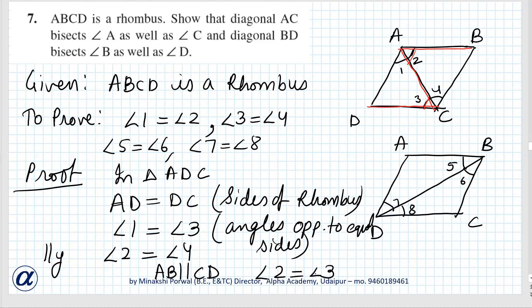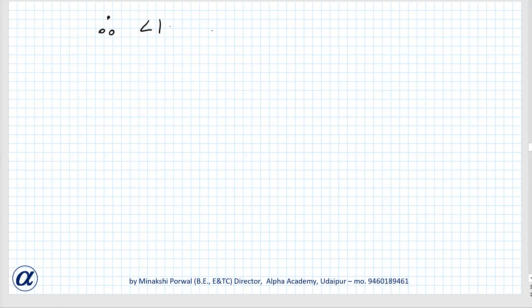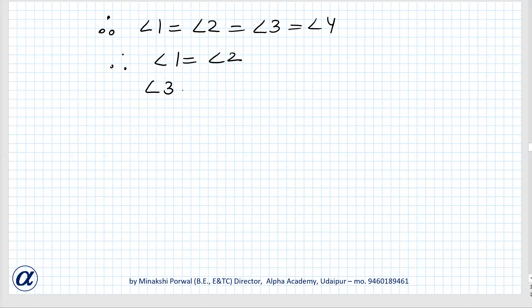So angle 1 equals angle 3, angle 2 equals angle 3, and angle 2 equals angle 4 — meaning all four angles are equal. Therefore angle 1 equals angle 2 equals angle 3 equals angle 4. Hence proved.